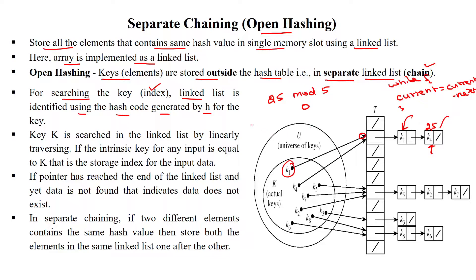When a key is searched in the linked list, it is traversed linearly from the start node to the last node by comparing values. If the key equals the input value 25, that is the index used to access that particular value. When inserting, we allocate space at the required index by adding an extra memory location and creating a link to the existing node.